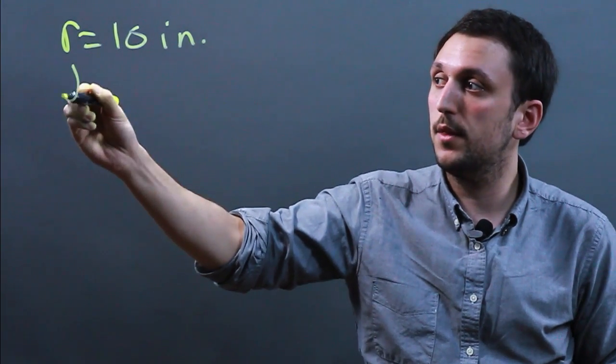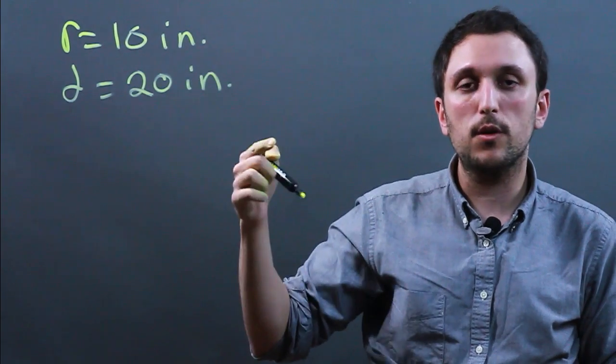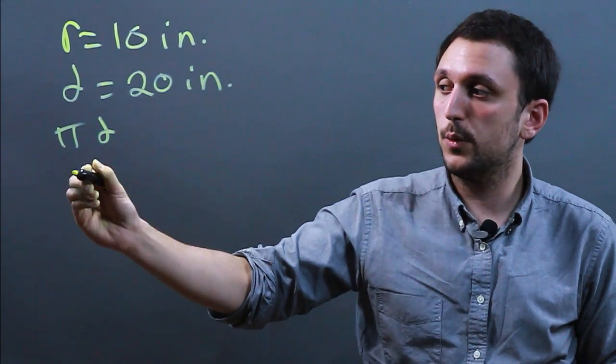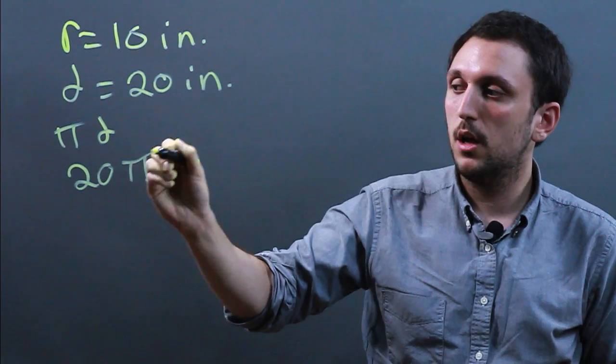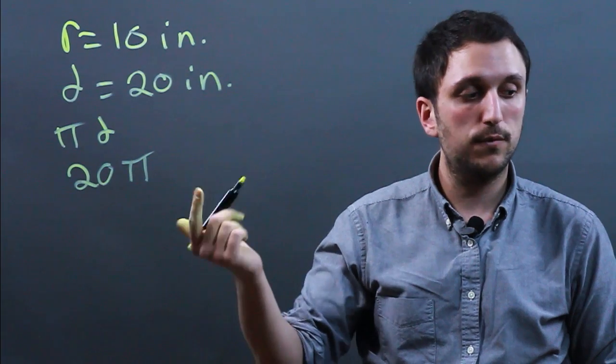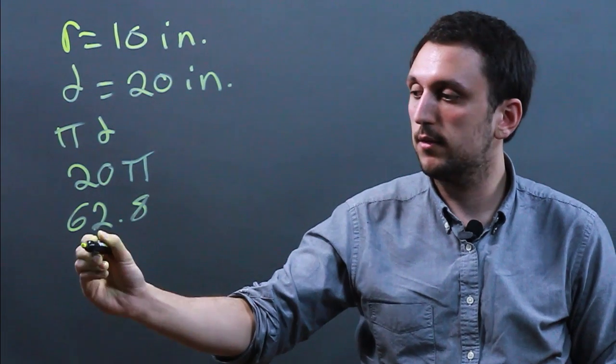Well if the radius is 10 inches then the diameter is 20 inches, and the way we find circumference is diameter times pi, or pi d. So we would get 20 pi, and pi is approximately 3.14, so roughly 62.8, which we would round to say 63.